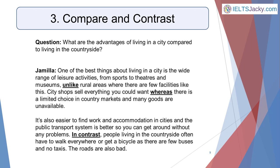The third type of Part 3 question is compare and contrast. For example: what are the advantages of living in a city compared to living in the countryside? In this answer, Jamila uses three different words or phrases to show that she's comparing two things. One of the best things about living in a city is the wide range of leisure activities, from sports to theatres and museums, unlike rural areas where there are few facilities like this. City shops sell everything you could want, whereas there is limited choice in country markets and many goods are unavailable. It's also easier to find work and accommodation in cities, and the public transport system is better. In contrast, people living in the countryside often have to walk everywhere or get a bike as there are few buses and no taxis. The roads are also bad.